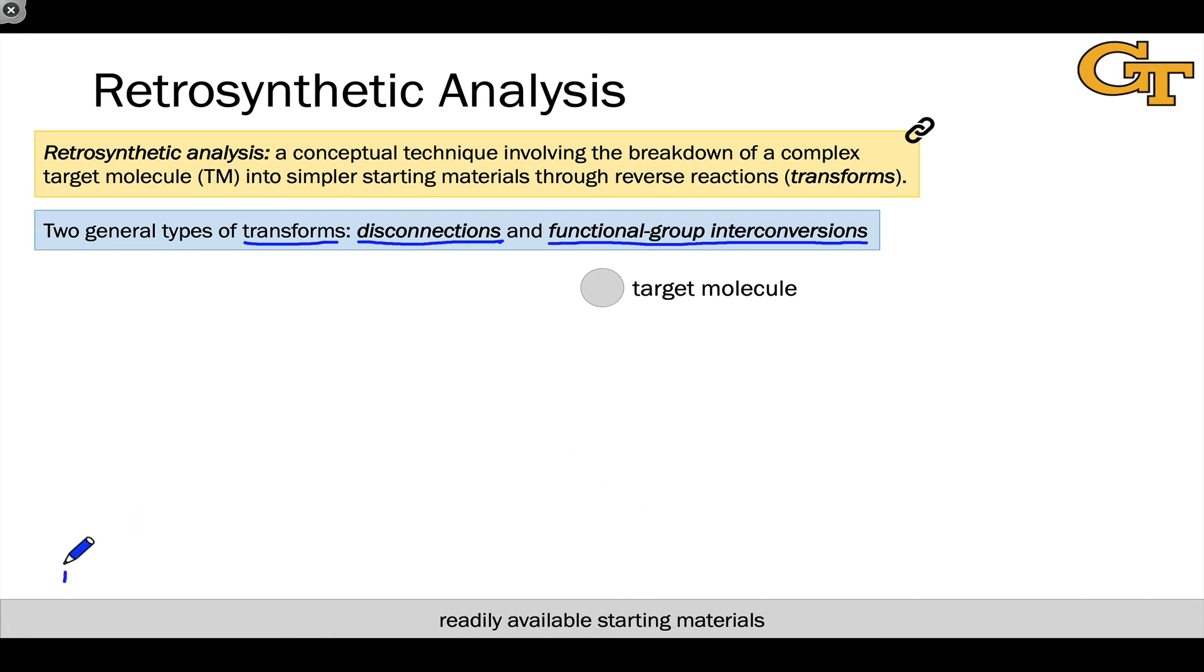Let's think about the vertical axis on this slide as increasing complexity. So our target up at the top is naturally the most complex structure we're going to be thinking about. And our starting materials are more than likely going to be the simplest structures we're going to be thinking about. A disconnection is really a simplifying transform that makes our target into something more simple. So we're moving down the complexity ladder when we engage a disconnection transform.